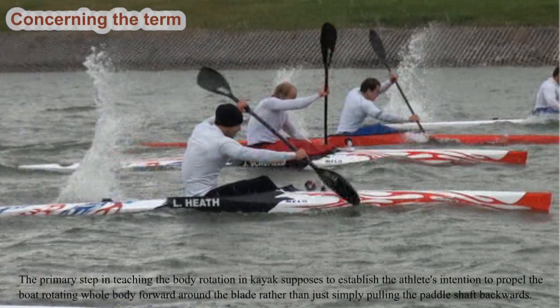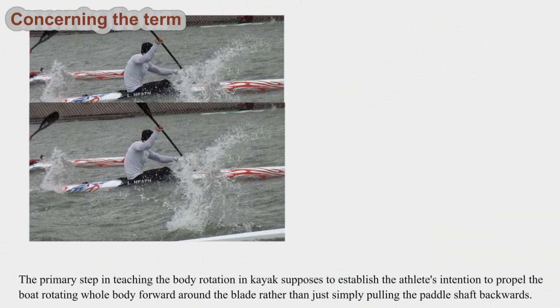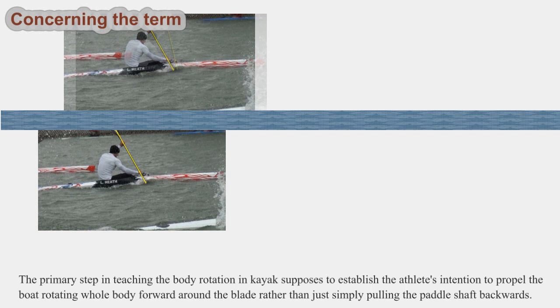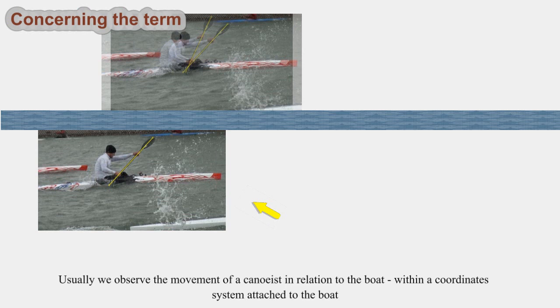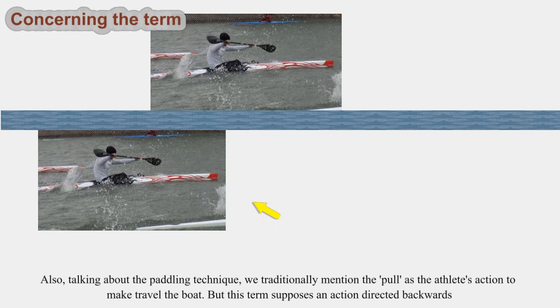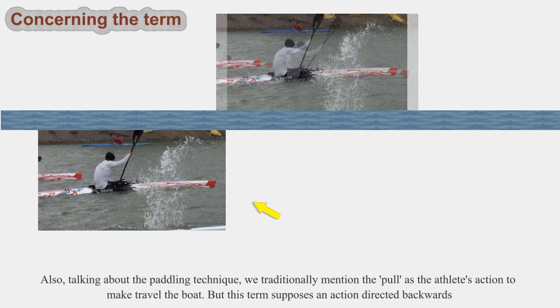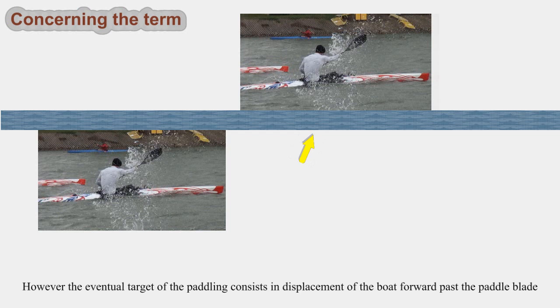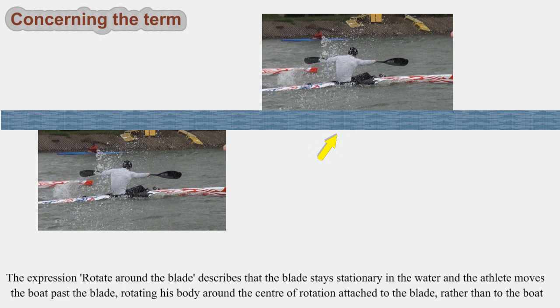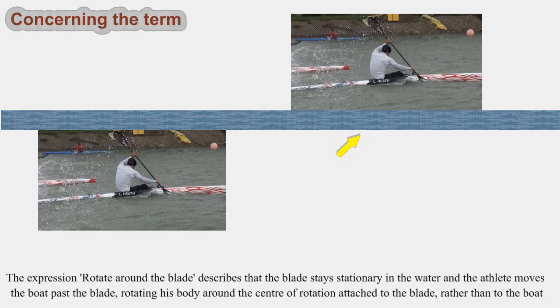Rotate around the blade. The primary step in teaching body rotation in kayak supposes to establish the athlete's intention to propel the boat by rotating the whole body forward around the blade, rather than simply pulling the paddle shaft backwards. The expression 'rotate around the blade' describes that the blade stays stationary in the water and the athlete moves the boat past the blade, rotating his body with a center of rotation attached to the blade rather than to the boat.